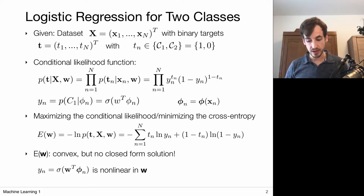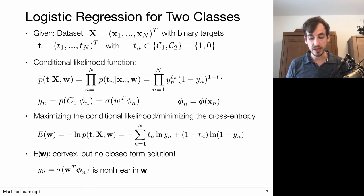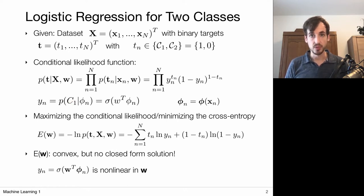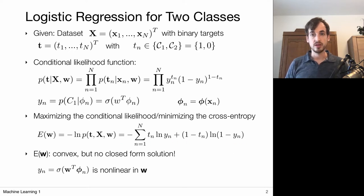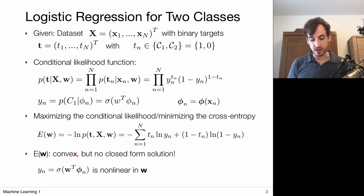As a quick recap, we have data pairs — input-output pairs — where the output is a binary target, so we're considering two-class classification. We base our prediction via a probabilistic discriminative model, trying to predict the probability of a data point belonging to class one. That probability is given by the logistic sigmoid function. To obtain the optimal model parameters w, we minimize the negative log-likelihood, also called the cross-entropy error function.